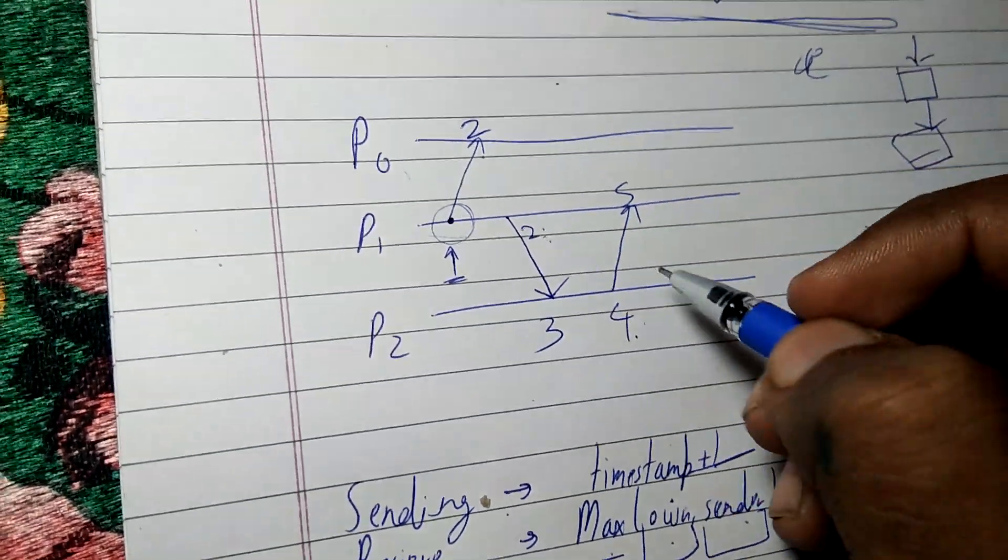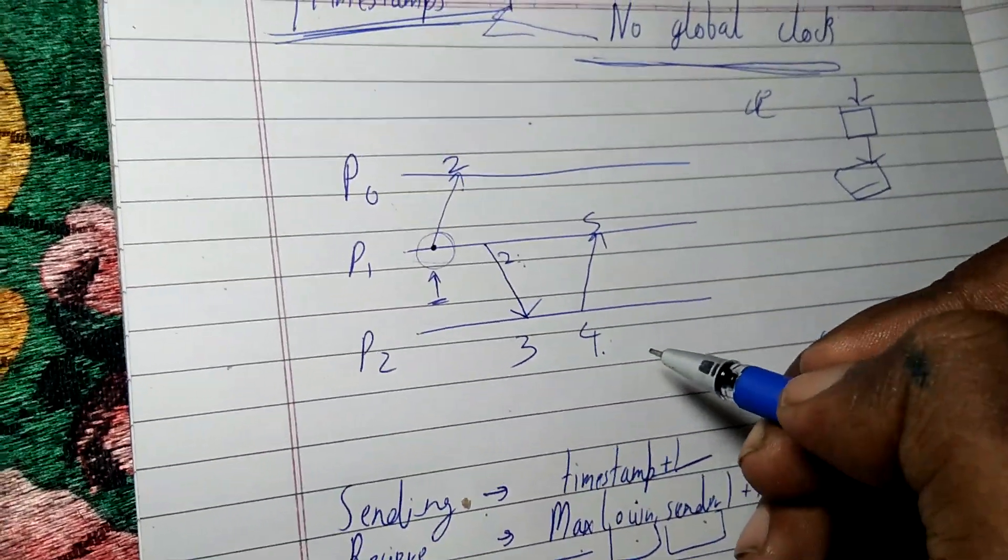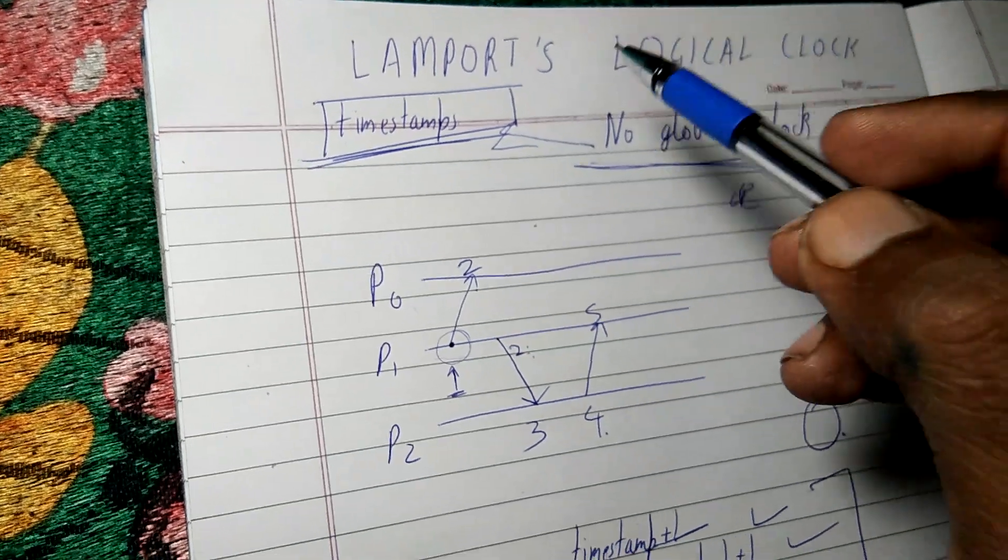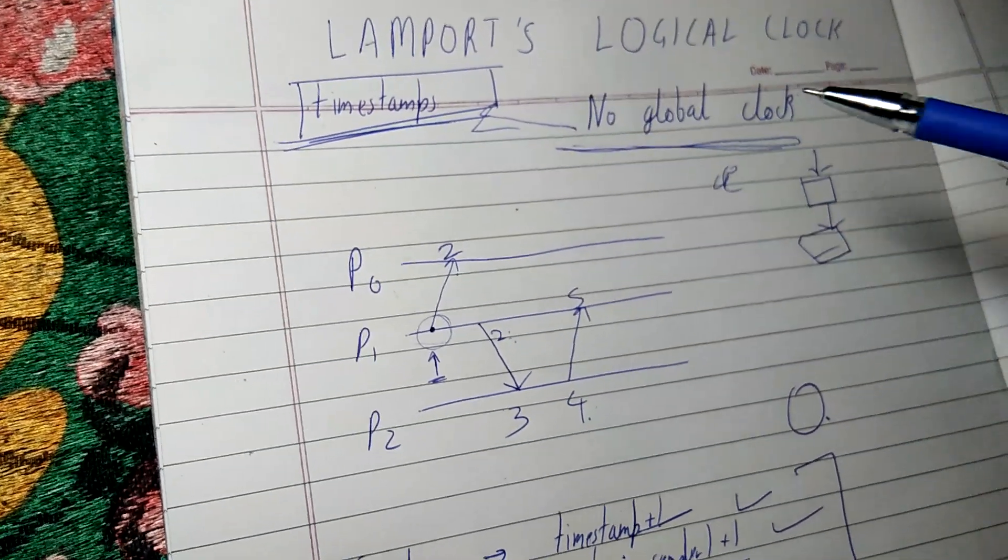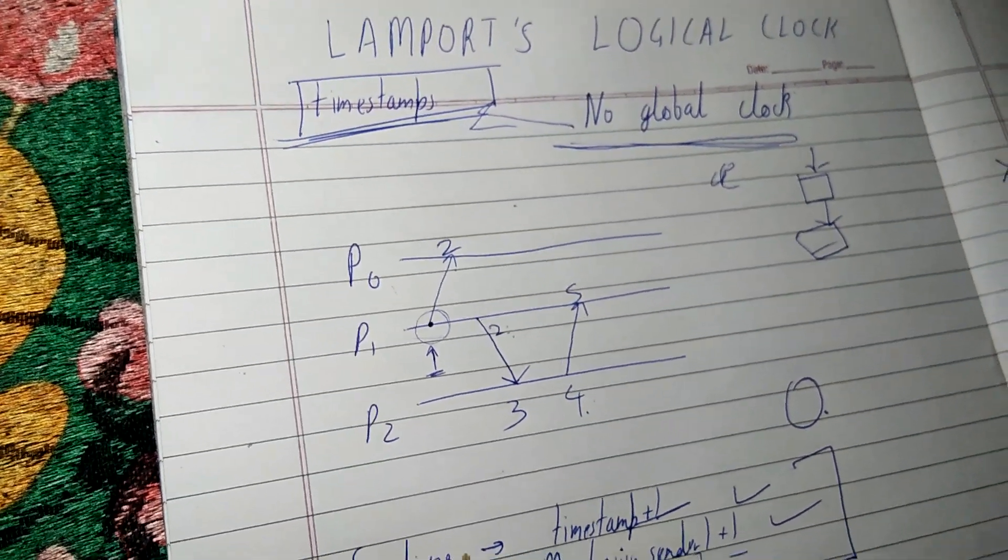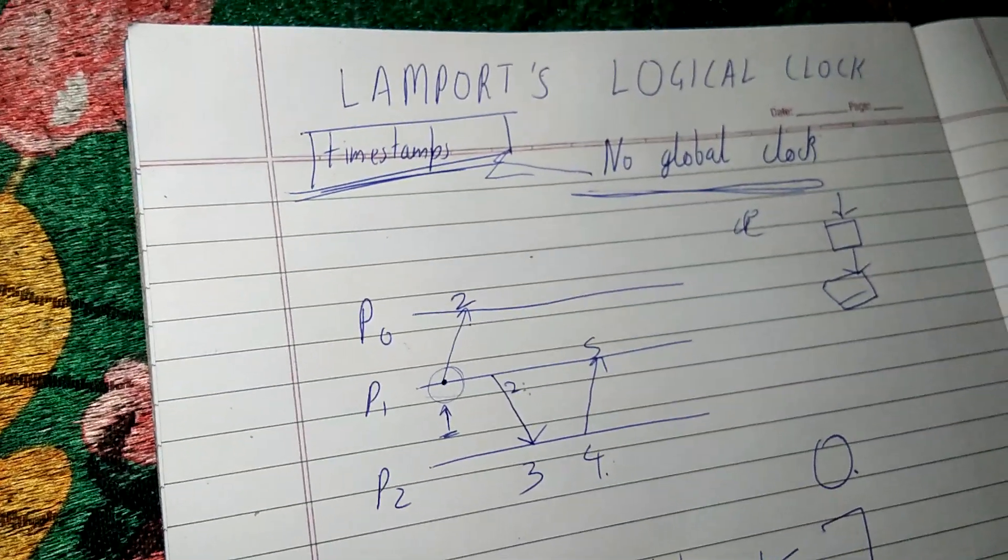So now we have a sequence of events showing what is happening after what, and this is the main reason we use Lamport's logical clock in maintaining a proper distributed system. Thanks for watching and do subscribe.